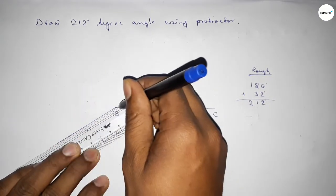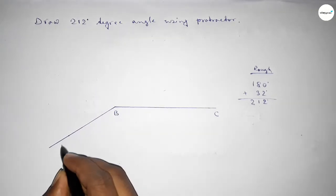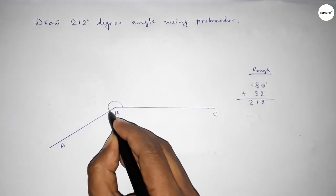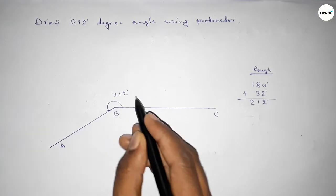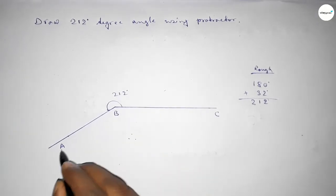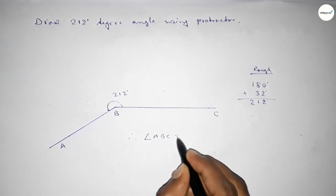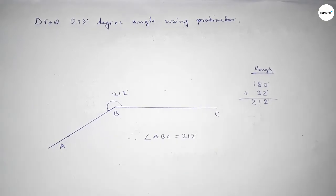And taking here point A. So angle ABC up to this, this is 212 degree angle. So therefore angle ABC equal to 212 degree angle. So that's all, thanks for watching, please share it.